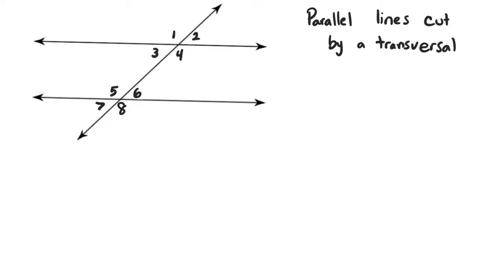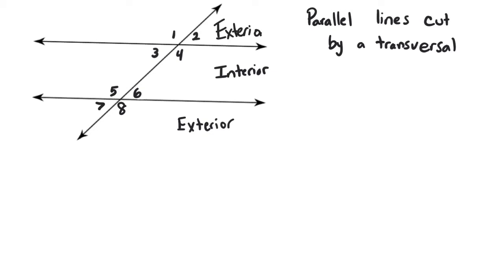And that's what we're talking about today. The way we are going to categorize these angles, there's different terminology we're going to use for naming the angle pairs and relationships. Any angle that is between the two parallel lines is going to be known as an interior angle — interior means inside. Anything above the top parallel line or below the bottom parallel line would be the exterior, because they're on the outside of the parallel lines. So angles one and two would be exterior angles, seven and eight would be exterior angles, and all the angles inside the parallel lines are interior angles.